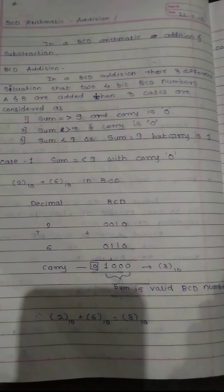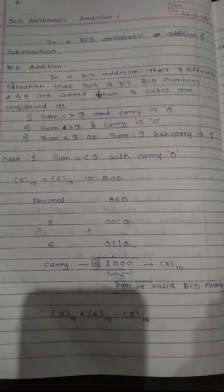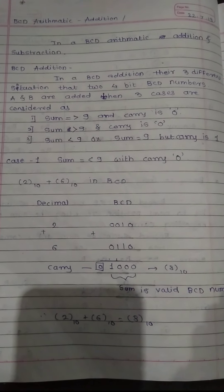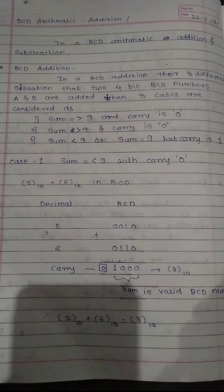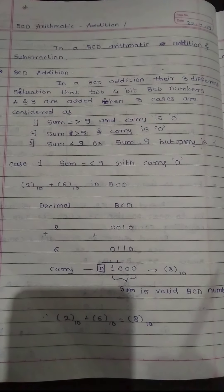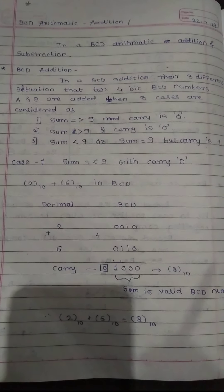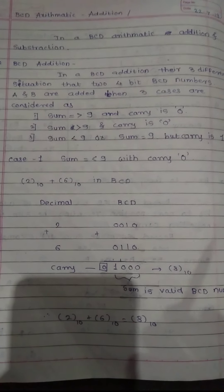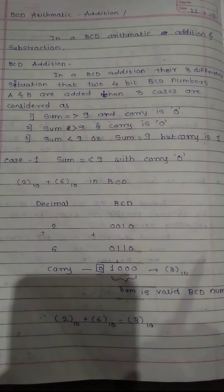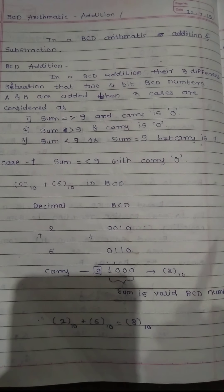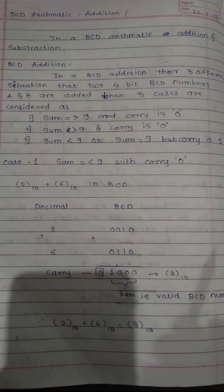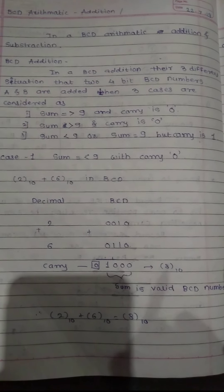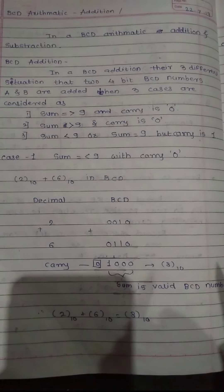In BCD addition, when two 4-bit BCD numbers A and B are added, there are three different cases to consider. In an exam, the case type is not defined — you have to find out which case applies and solve the problem. The first case is sum greater than 9 with carry 0; the second is sum greater than 9 with carry 0; the third is sum less than or equal to 9 but carry is 1.